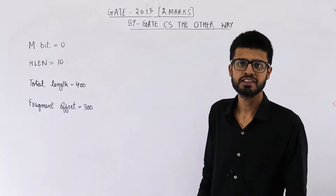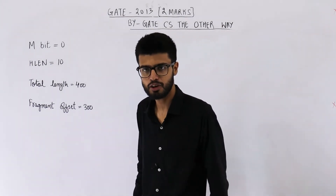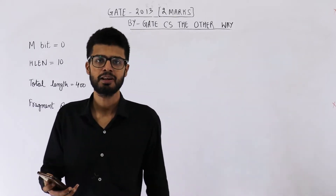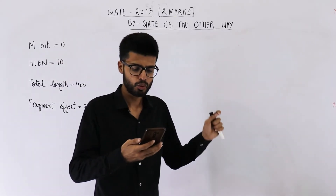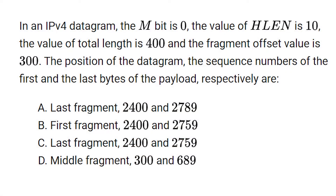Hello dear students, welcome back. This question is from the GATE 2013 exam and is for two marks. Just read the statement once, then I'll explain it. The question says: in an IPv4 datagram, the M bit is 0, the value of HLEN is 10, the value of total length is 400, and the fragment offset value is 300. Find the position of the datagram, and the sequence numbers of the first and the last byte of payload, respectively.